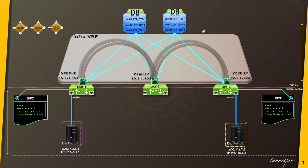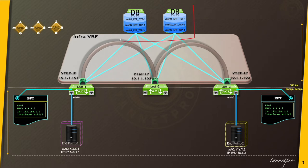There is one exception: when the spine comes to a leaf switch to get some update, or gives it to the database, the spine switches learn the endpoint details using the data plane. All leaf switches are responsible for sending their information to the centralized database or spine switches. Whatever new endpoint gets learned by the leaf switch, it has to update its master — you can think of the spine as the central master switch.